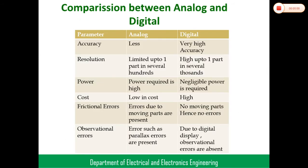Now, the comparison between analog and digital meters. Before digital meters, we used only analog meters — voltmeter, ammeter, wattmeter, and energy meter. Now we use digital meters because of certain advantages. The first important comparison is accuracy: the accuracy of analog meters is very low because the pointer introduces reading errors, whereas digital meters give accurate values.